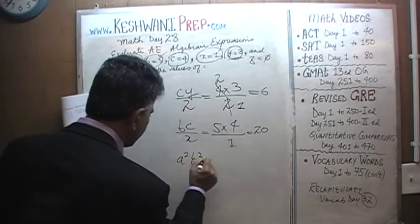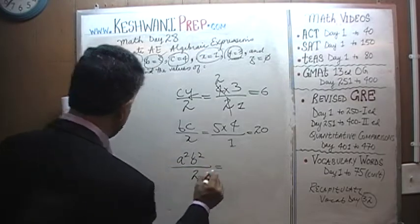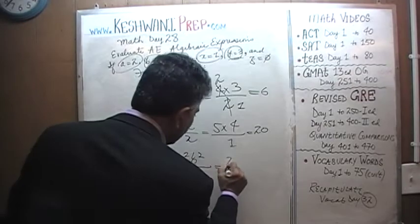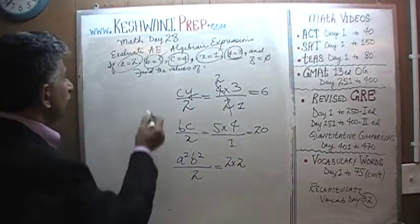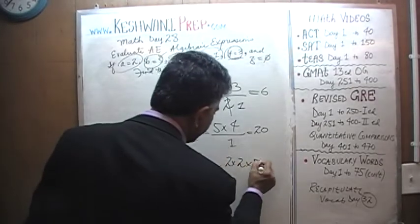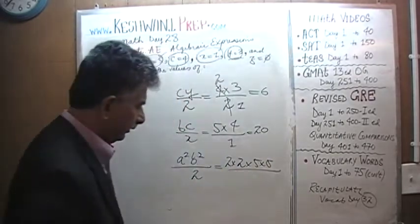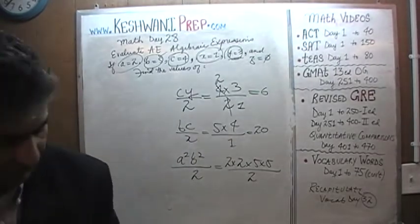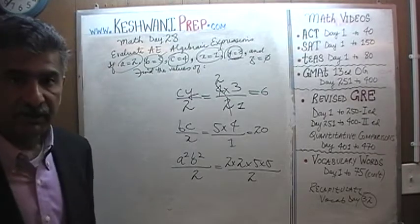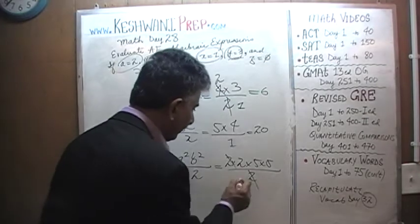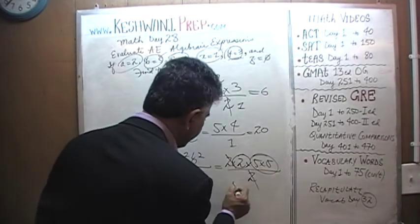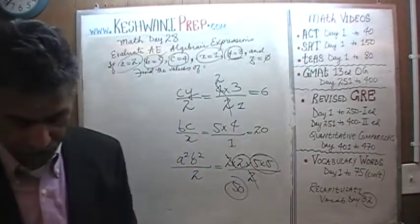How about A squared B squared over 2. A squared is 2 which I'm going to write as 2 times 2. B squared is 5 times 5 over 2. Again, we see 2 at the bottom, we see 2 at the top. Let's divide top and bottom by 2, so we can knock it out and it's gone. We find 25 times 2 which is 50.